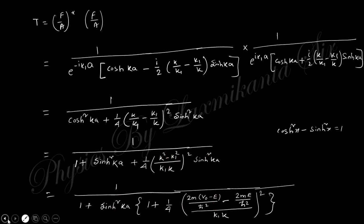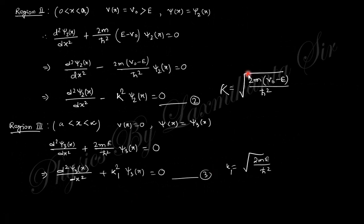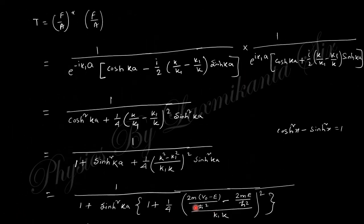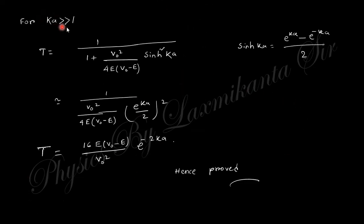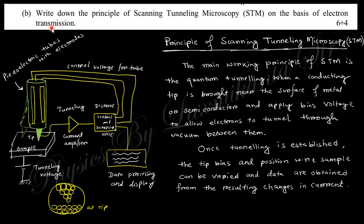Substituting the values of k and k₁ into this expression gives you the full result. Then applying the boundary condition that ka >> 1: when ka is very large, sinh(ka) >> 1, so the addition of 1 can be neglected. This gives you the approximate transmission coefficient expression. This completes question 9.